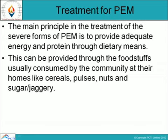The main principle in the treatment of severe forms of PEM is to provide adequate energy and protein through dietary means. This can be provided through foodstuffs usually consumed by the community at home, such as cereals, pulses, nuts, sugar, and jaggery.